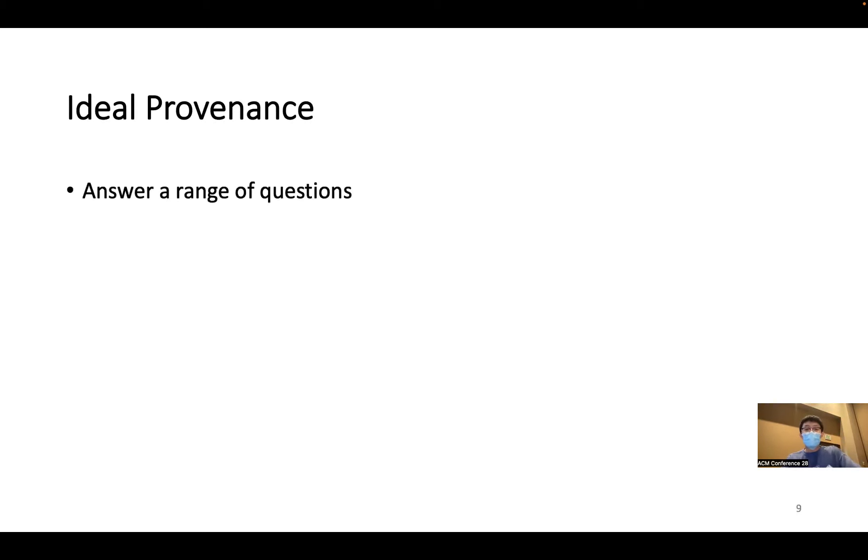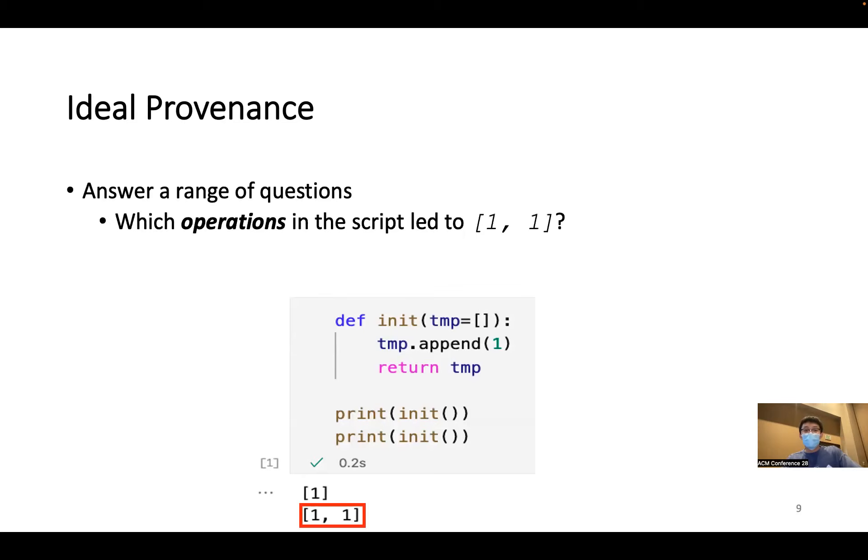So first of all, ideal provenance should be able to answer a range of questions. For example, for the incorrect code snippet, one might ask which operations in the script led to the list with two ones. It is obvious here, but might not be obvious if the program gets lengthy. Also, the ideal provenance should be able to answer questions related to data, such as which input file led to an output. These are not the only questions one might have. Developers might ask all kinds of questions based on the output they are seeing.